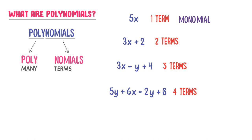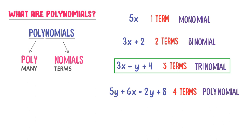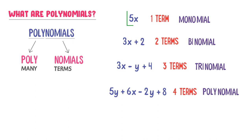Similarly, instead of two terms I write binomial, instead of three terms I write trinomial, and instead of four or more terms I write polynomial. Thus: one term is called monomial, two terms is called binomial, three terms is called trinomial, and four or more terms is called polynomial. And all of these — monomial, binomial, trinomial — are polynomials.